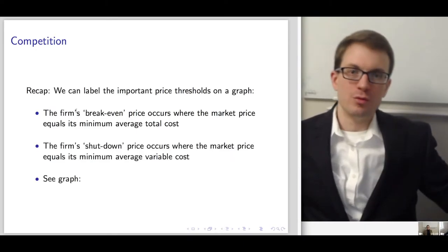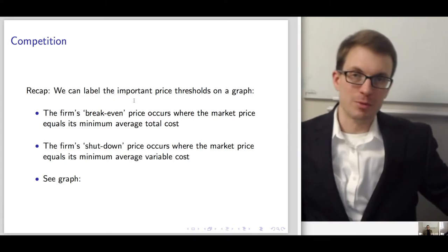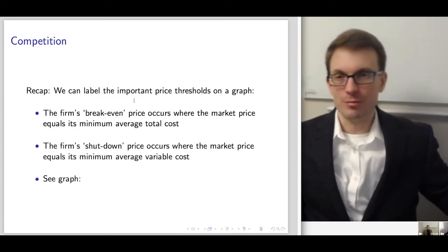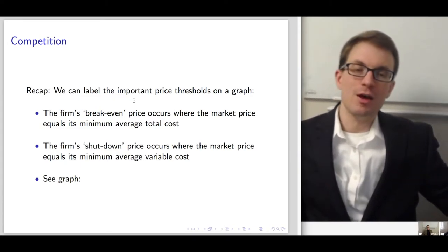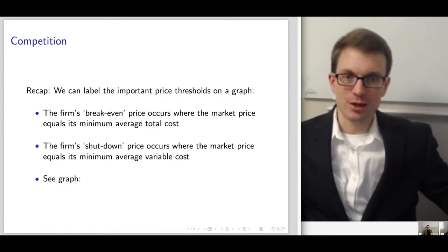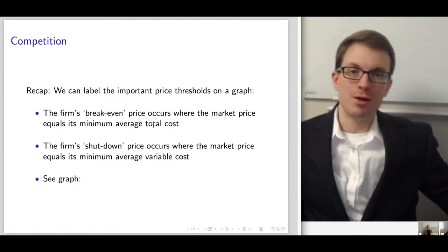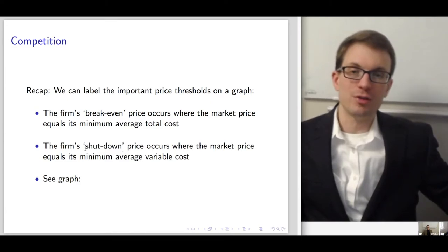We can label important price thresholds on the graph. The breakeven point is always where market price equals minimum average total cost. The shutdown price is always where the market price equals minimum average variable cost.